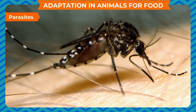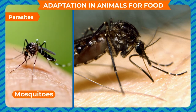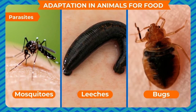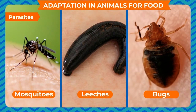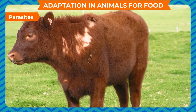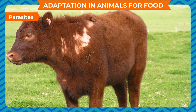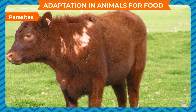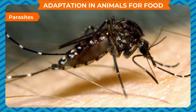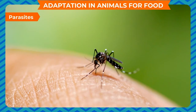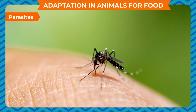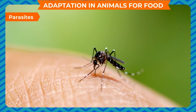Parasites. Some animals such as mosquitoes, leeches, bugs, etc. depend on other animals for their food. Some of these animals live in the bodies of other animals. They are toothless but they have sucking tubes to suck the blood from the bodies of humans and other animals. Such animals are called parasites.